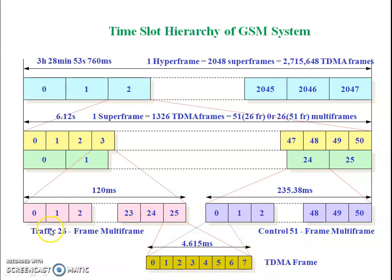At a higher level, we have traffic channel 26 multi-frames and control channel 51 multi-frames. This 51 and 26 multi-frame combination forms one super frame, and approximately 2000 such super frames make one hyper frame. The time duration for one hyper frame is around 3 hours.